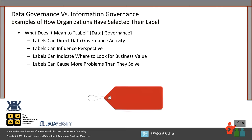What does it mean to label governance? By calling it data governance versus information governance, you may focus completely on your structured data versus also including your unstructured data. I've seen organizations evolve from data governance into information governance because they've started to apply the same level of discipline to unstructured data that they were applying to structured data. The label can direct the activities you're taking with your governance program, influence people's perspective, and get people to ask questions. We need to be very careful about what label we put on our governance program.